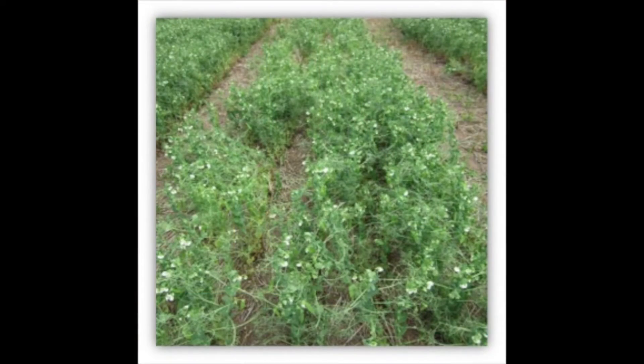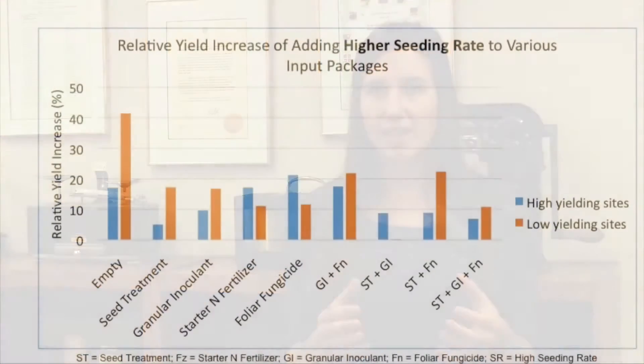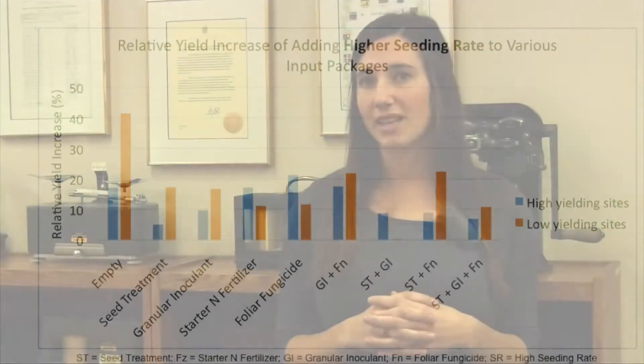At our low yielding sites — generally Swift Current and Indian Head, though at Indian Head we did have a phantom issue take over some plots — we actually got a large yield response to a high seeding rate. Adding additional inputs didn't really seem to increase yield any further. We seem to be maximizing yield potential at those low yielding sites with a higher seeding rate, and nothing else we could throw at it could really maximize yield beyond that.